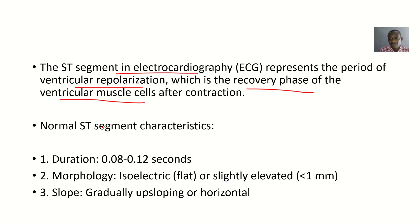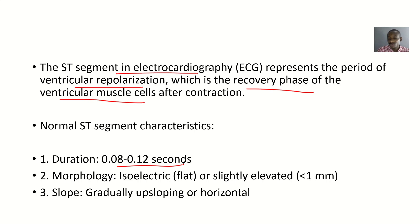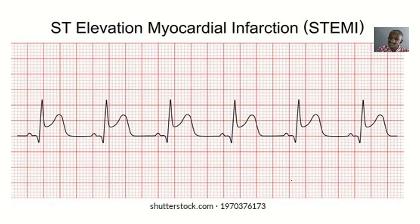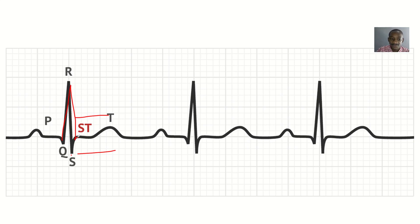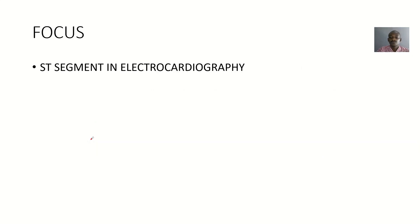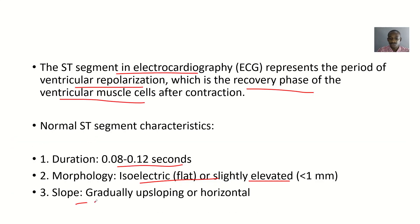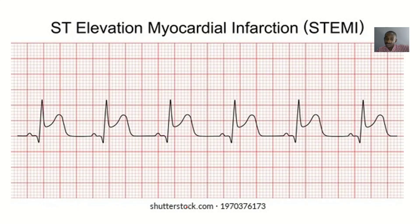If there's no abnormality in the ST segment, it shows the heart is relaxing as it should — unlike in restrictive cardiomyopathies. A normal ST segment has a duration of 0.08 to 0.12 seconds. Its morphology can be isoelectric (flat) or slightly elevated but still less than one millimeter. The slope is gradually upsloping or horizontal — a short straight line or slightly upsloping.